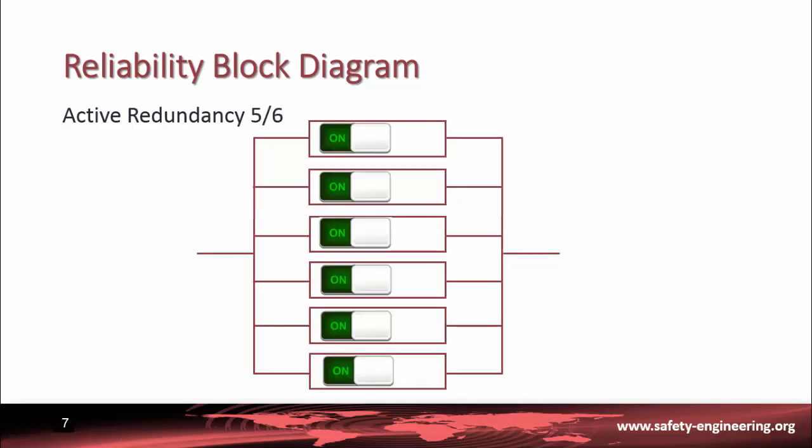For instance, an active redundancy 5 over 6 indicates that we have 6 units but only 5 need to be in operation for the system to work properly.